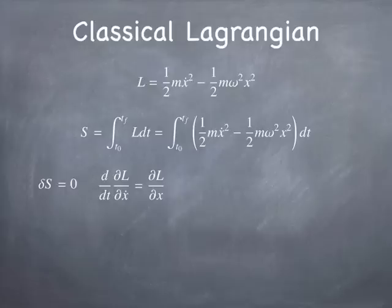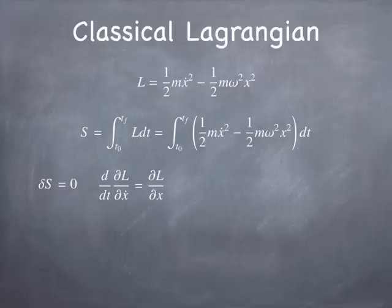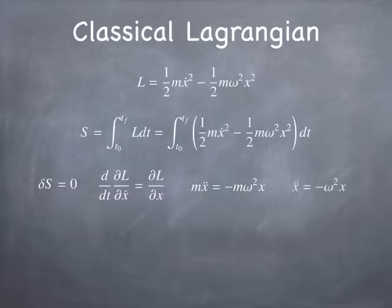The requirement that the variation in S be zero gives rise to a differential equation: the time derivative of the partial of the Lagrangian with respect to x-dot equals the space derivative of the Lagrangian with respect to x. In this case, dL/d(x-dot) is just the momentum — it's m x-dot. The time derivative of the momentum is m x-double-dot. And dL/dx is minus m omega squared x — that's nothing other than the force. So this reduces to Newton's second law, giving a differential equation for the motion of a mass on a spring.